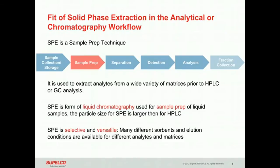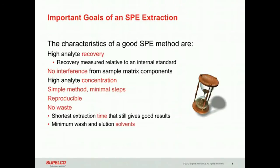SPE can be selective and versatile — many sorbents and elution conditions are available. What are the goals in using SPE? The first characteristic of a good SPE method is to obtain high analyte recovery, which contributes to higher sensitivity of the analytical methods. The second goal is to provide minimal interference from the sample matrix, contributing to both sensitivity and good resolution. Analyte concentration is also a goal of SPE, improving sensitivity further.